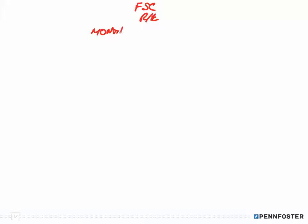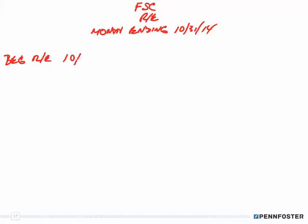So we make the heading again: Five-Star Catering, statement of retained earnings, for the month ending October 31st, 2014. Center aligned. Now for the description, remember the process: beginning retained earnings as of October 1st, 2014 — and I'd write out the word October, not abbreviate it. Then we add net income because we had a profit from our income statement.